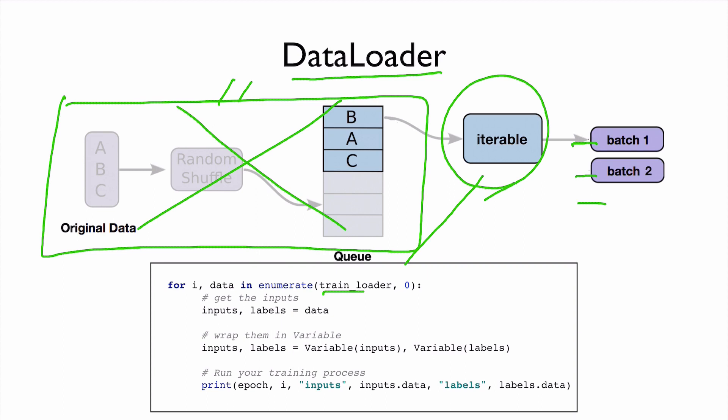Then we just put this one into for loop. And each loop, what we do is that we get the batch data here, and then we divide them as inputs and labels, and they will wrap with the variables, and then we can use these inputs and labels for our training cycle.